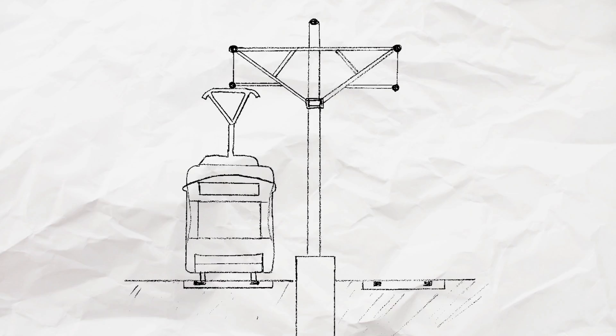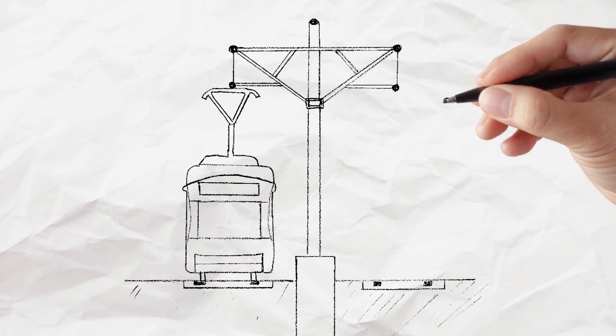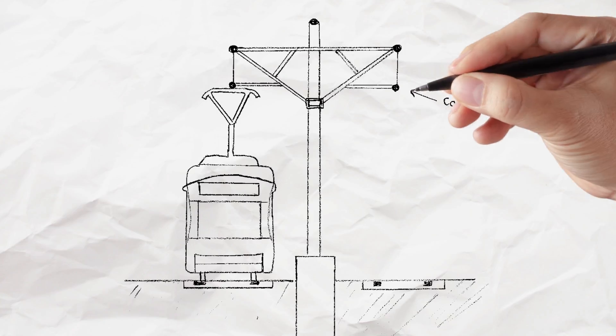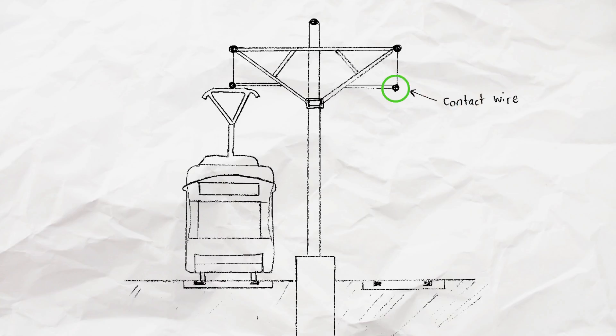There are two stacked wires on the catenary pole above the track. The bottom wire is called the contact wire. This is the wire that carries electricity from the TPSS to the ION train. The top wire is called the messenger wire. It helps keep the contact wire in place.